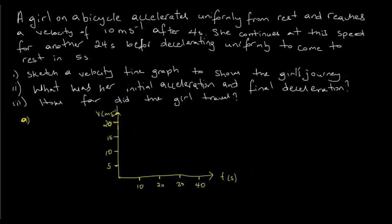The question says a girl on a bicycle accelerates uniformly from rest and reaches a velocity of 10 meters per second after four seconds. She continues at this speed for another 24 seconds before decelerating uniformly to come to rest in five seconds. Part one asks us to sketch a velocity-time graph to show the girl's journey.